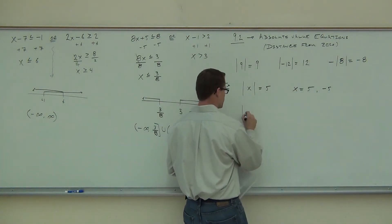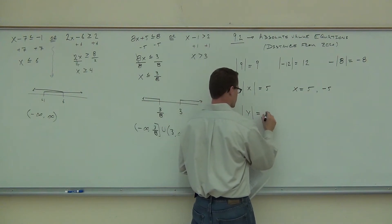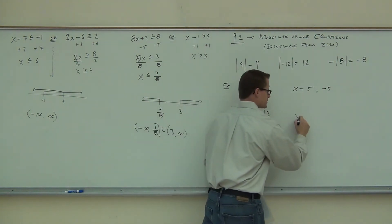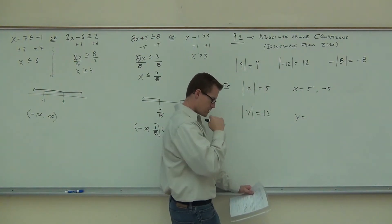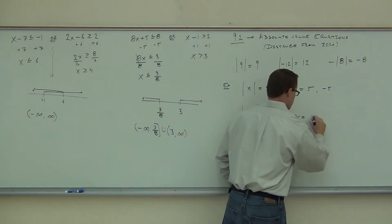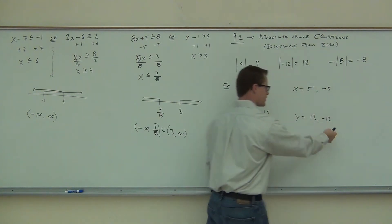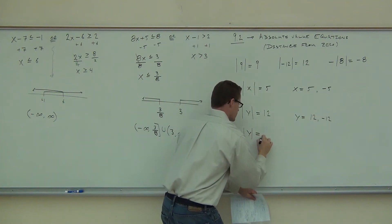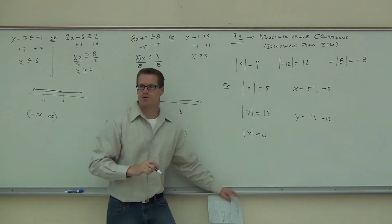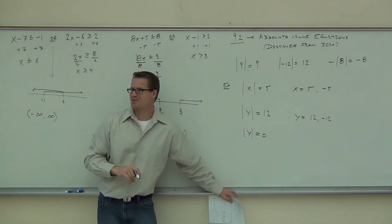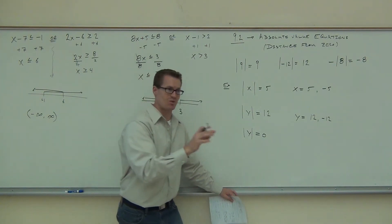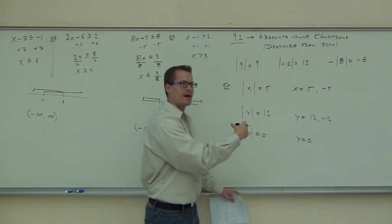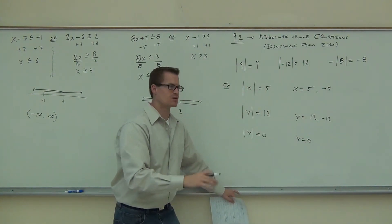How about the absolute value of y equals 12 — does that still have two solutions? Yeah. What are they? Positive 12 and negative 12. Because if I plug both of those things in, they're both going to give me positive 12. How about absolute value of x equals zero — how many solutions does that have? One. Yeah, there's no negative zero. So this is the only time where you actually get just one solution. If it's equal to zero, that's the only thing that's going to work.